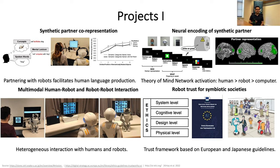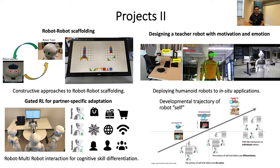We also have other ongoing projects, including robot-robot scaffolding and designing a teacher robot using human teachers' gestures, realizing them on robots and employing them in the classroom. In one of the latest works, we are using gated multimodal reinforcement learning where a robot interacts with three different partners, each with different skills, and the robot learns to differentiate its partners' skills. The submission deadline for this paper is tonight — so wish me luck, cross your fingers.